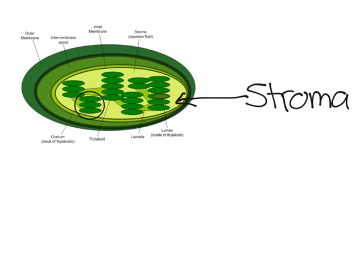Chloroplasts are green and they are drawn with a green color, and that's due to chlorophyll.